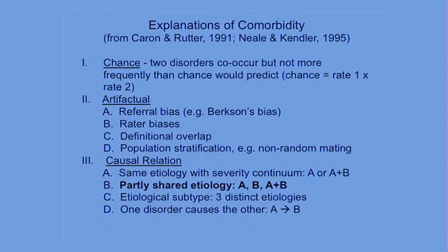Another possibility is definitional overlap — many symptoms in the DSM are shared across disorders. Even if they have different meaning in different disorders, the actual symptom is shared, so at a descriptive level there's inevitably going to be some comorbidity just because of overlapping symptoms. A graph analysis of DSM-IV showed huge overlapping clusters defined by shared symptoms, so just at the level of shared symptoms, many disorders will appear related.